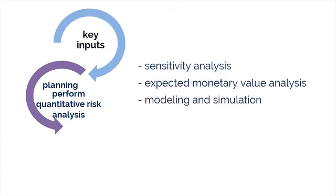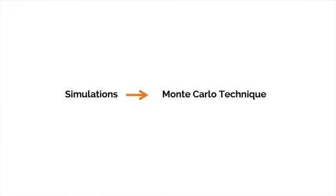A third technique is modeling and simulation. We can simulate a project in a model and translate the specified detailed uncertainties of the project into their potential impact on project objectives. We typically perform simulations using the Monte Carlo technique. In a simulation, we compute the project model many times with input values chosen at random for each iteration from the probability distributions of these variables. It's really about conducting what-if scenarios on those risks that may pose the greatest threat or present the greatest opportunity on the project, and seeing how any change to a project parameter will impact the project in terms of cost or schedule.